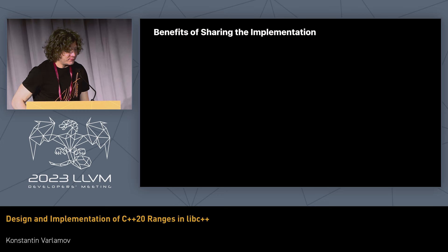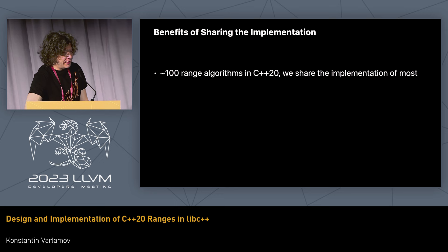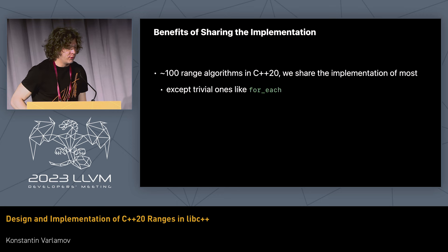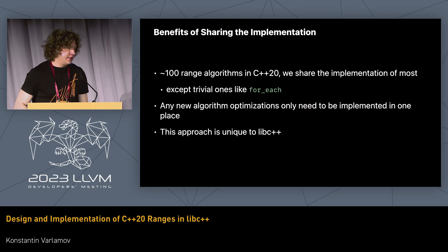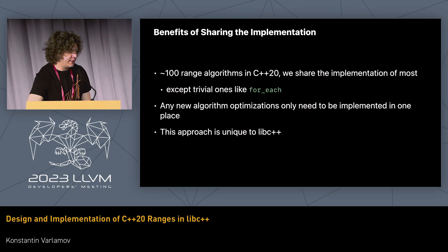After we worked that out, it just worked. The benefits are considerable — there are something like 100 range algorithms, and we share most of the implementation with the classic ones. The main benefit is a single source of truth for any optimizations, including new ones. For example, just recently we had a patch that optimized both std::equal and std::ranges::equal. As far as we know, we are the only one of the three major standard library implementations to do this.